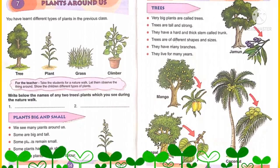So let us revise. Plants: some are big, some are small. Some plants remain small, some plants have a big stem. Most of the plants are green in color.